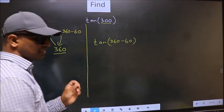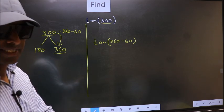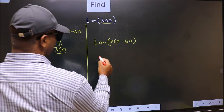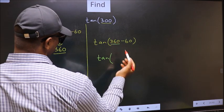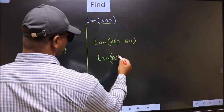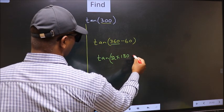This is your step one. Next, tan—in place of 360 now we should write 2×180 minus 60.